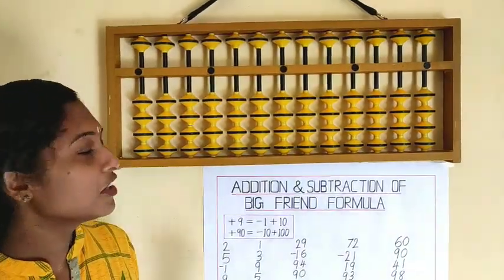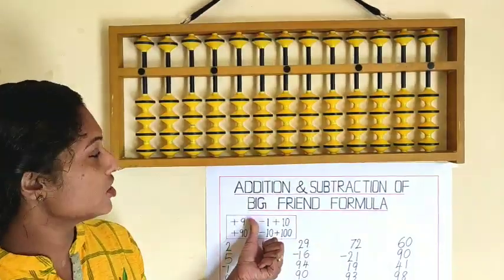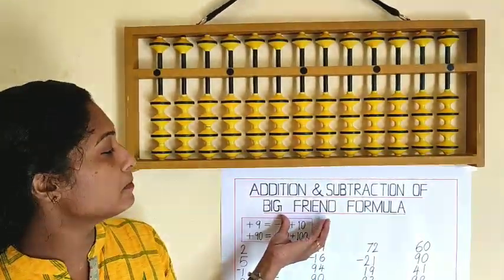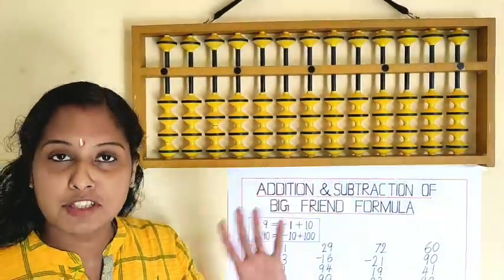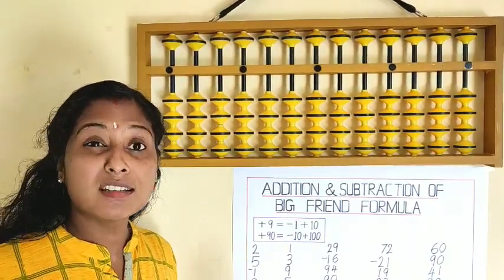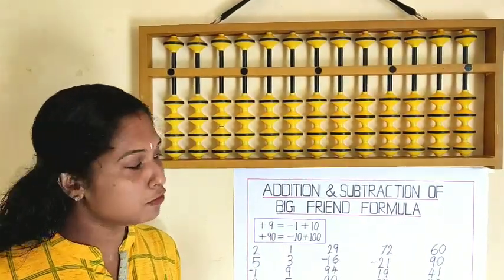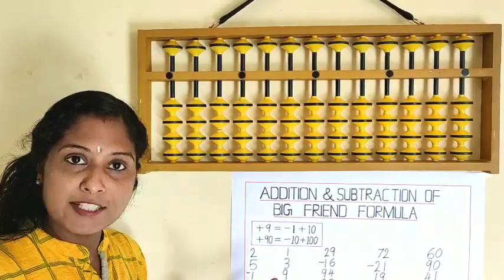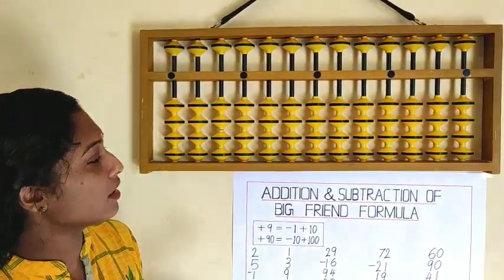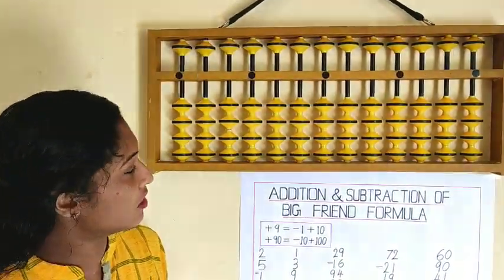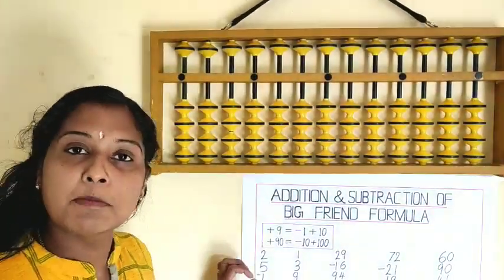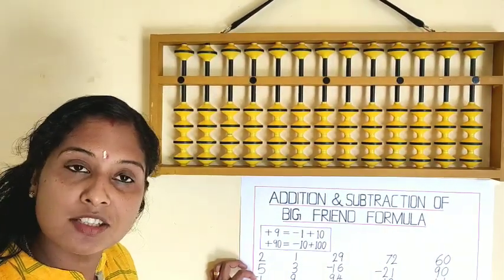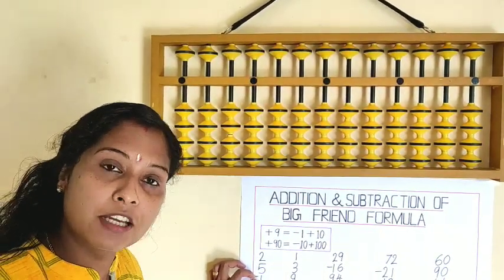Hi dear children. In today's session we are going to discuss addition and subtraction of big friend formula. You have already learnt big friend formula and you know there are 9 formulas for addition and 9 formulas for subtraction. The common big friend is 10, and the counting numbers less than 10 are big friends.